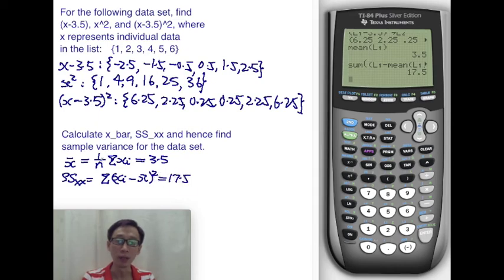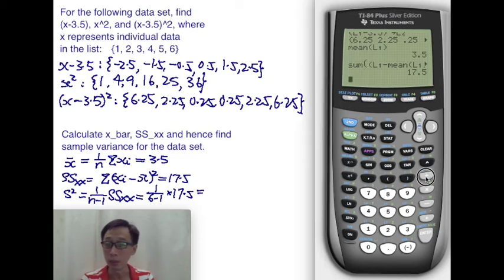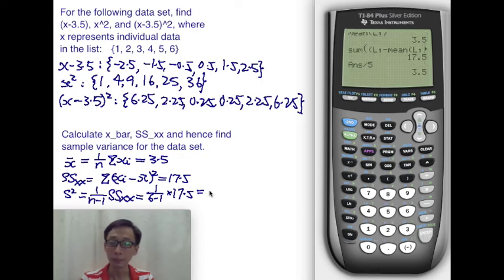Now, if you want to find the sample variance, what is sample variance? That is basically 1 over N minus 1 of the above, which is SSXX. So what you need to do is then is just, we have 6 pieces of data, right? So 6 minus 1 of 17.5. And that is going to be, so let's divide this by 5. Okay? 3.5.